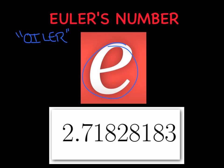E is 2.71828183, and all in all it's very similar to pi. We're going to talk about it being an irrational number, a numerical constant, and we don't want to consider it a variable by any means.